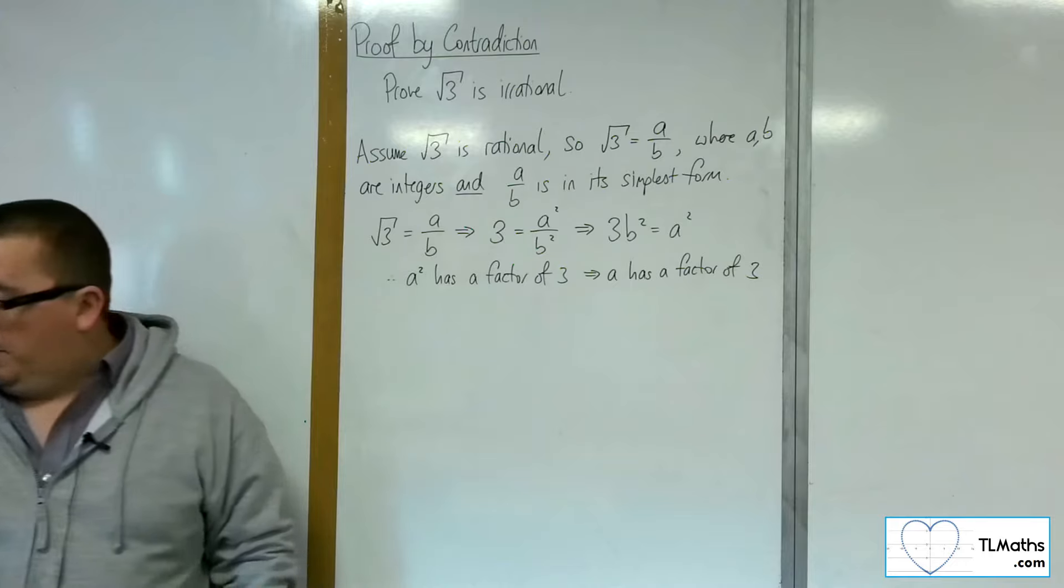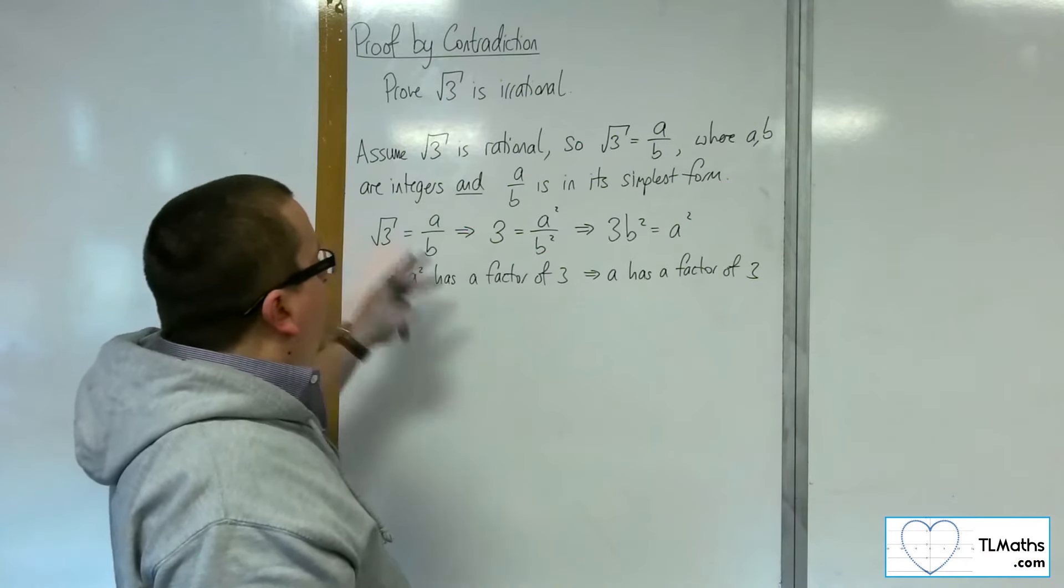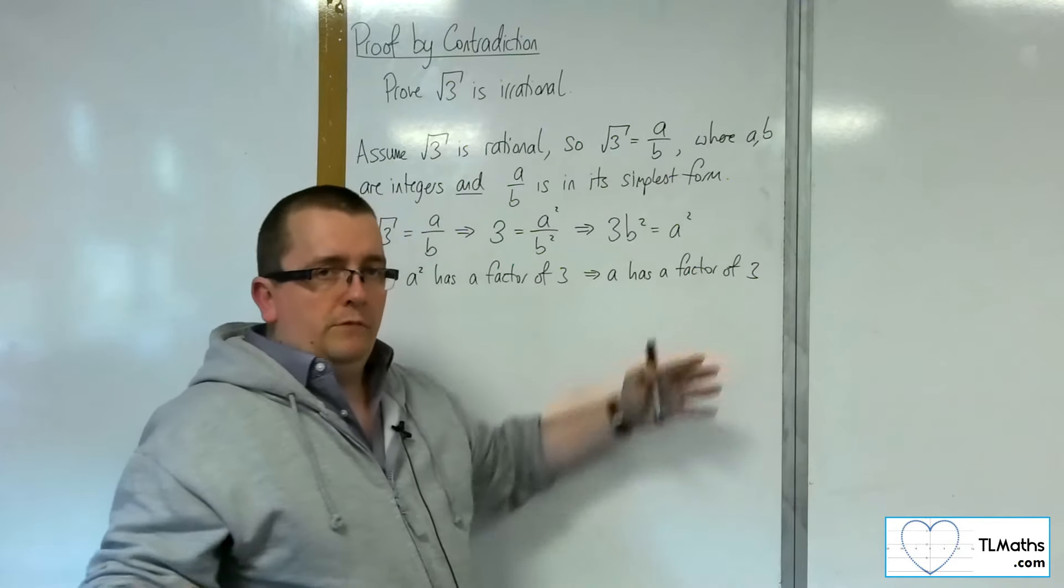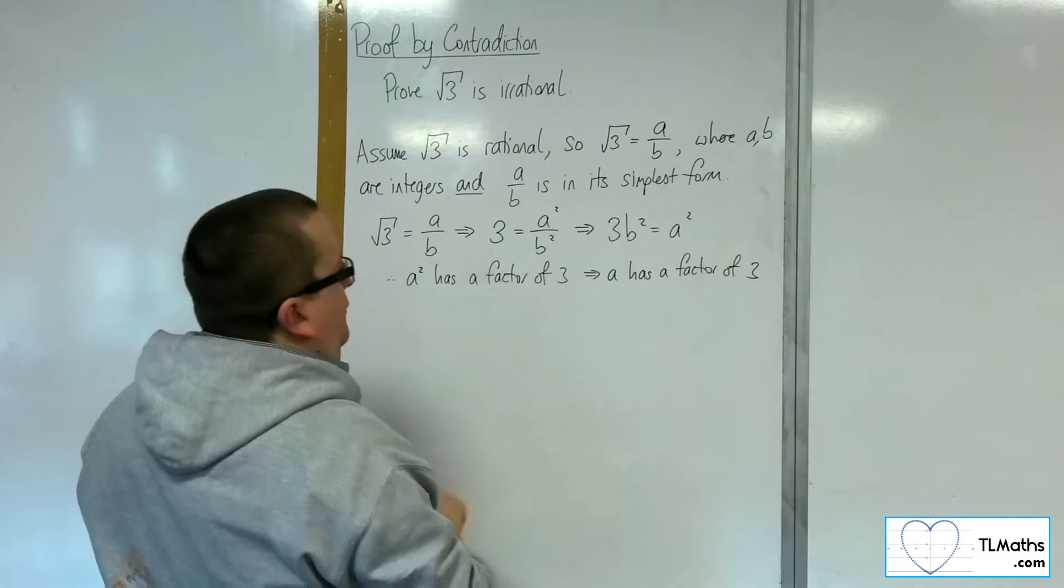Consequently, you can make the same argument if you're doing root 5 is irrational. If a squared has a factor of 5, then a must have a factor of 5 also. It just stands to reason. So a has a factor of 3.